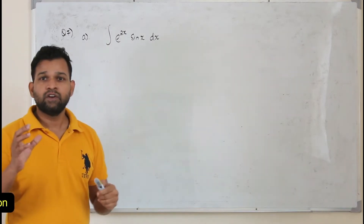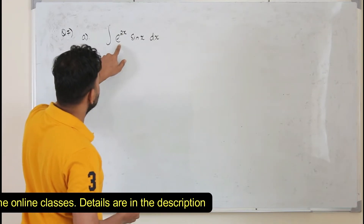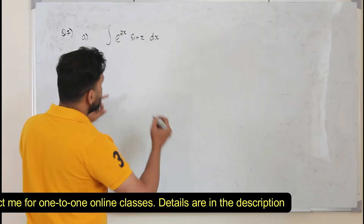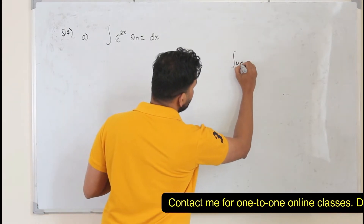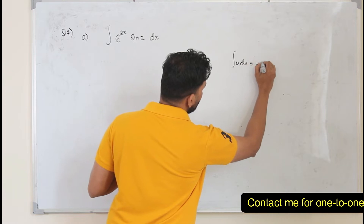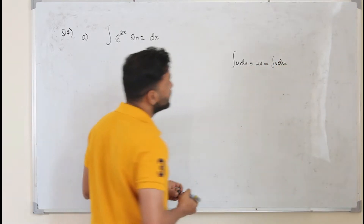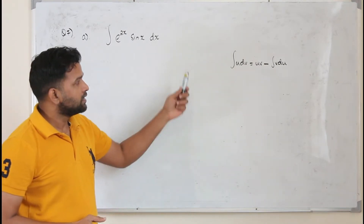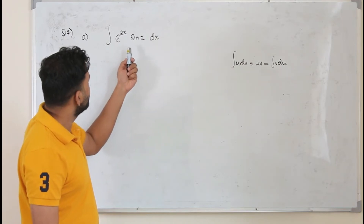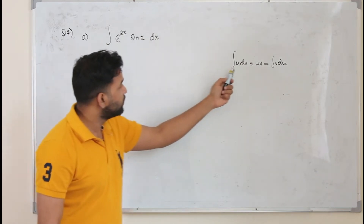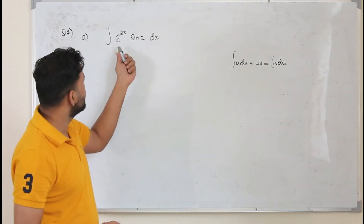We are going to apply the method called integration by parts. When you have two functions together, you need to apply integration by parts. Integration by parts states: integral u dV equals uv minus integral v du. You have to decide which function is u and which function can be considered as dV.